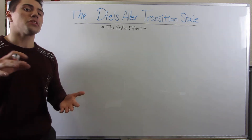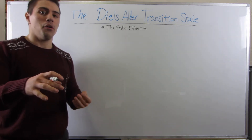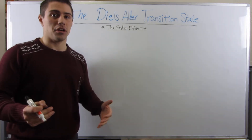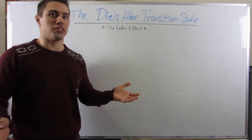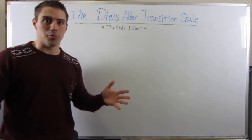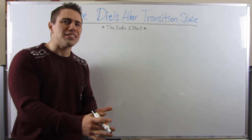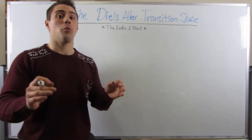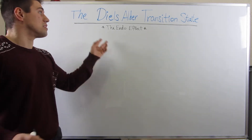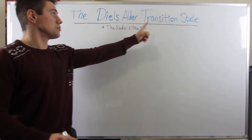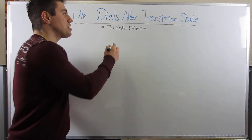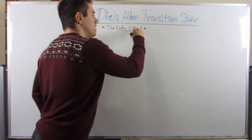Hey guys, so in the last video, maybe there were a few of you thinking to yourselves, what the hell is Joe saying? What's this whole in and out group nonsense? How does that work? Why does it work? Well, I'm glad you stuck around because in this video, we're going to draw Diels-Alder transition states and something called the endo effect.